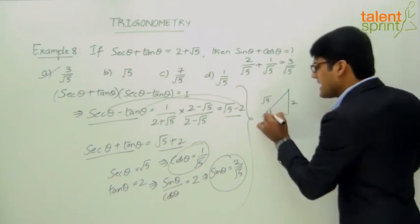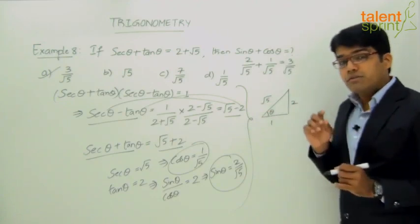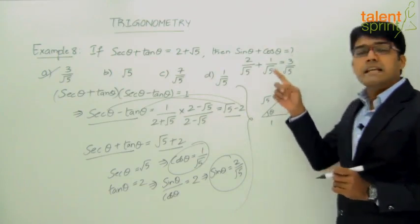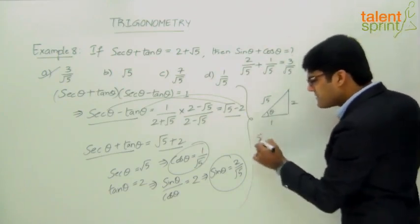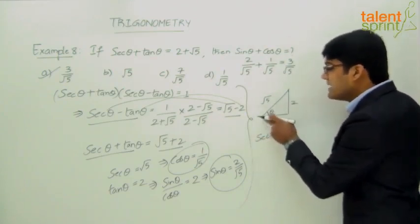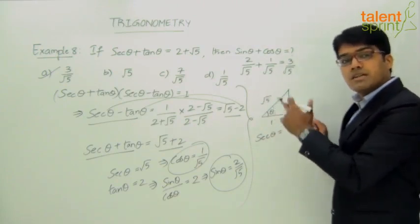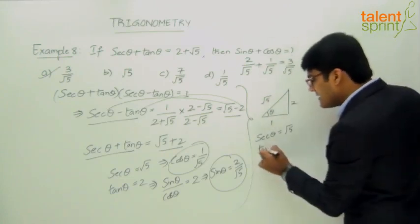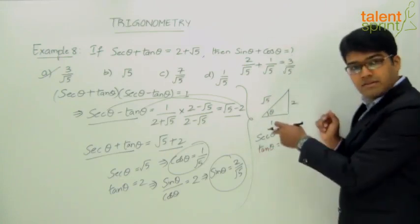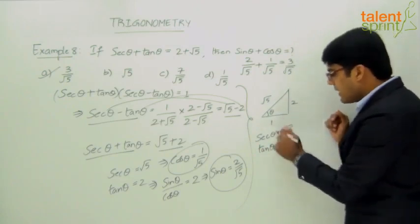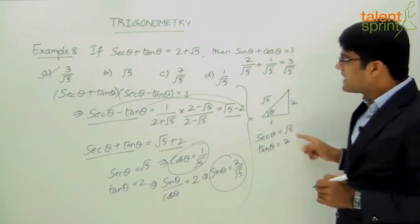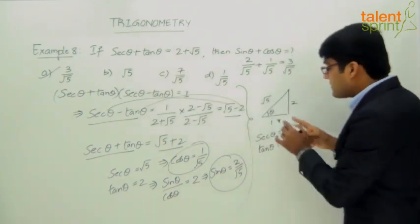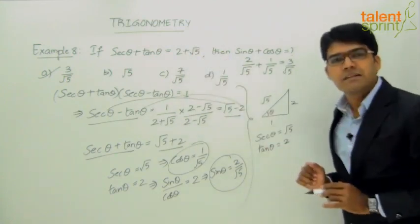With hypotenuse root 5, base 1, and perpendicular 2, secant theta equals hypotenuse by adjacent equals root 5 by 1 equals root 5, and tan theta equals opposite by adjacent equals 2 by 1 equals 2. So secant theta plus tan theta equals root 5 plus 2, which matches the given equation. The triplet 1, 2, root 5 satisfies the equation.